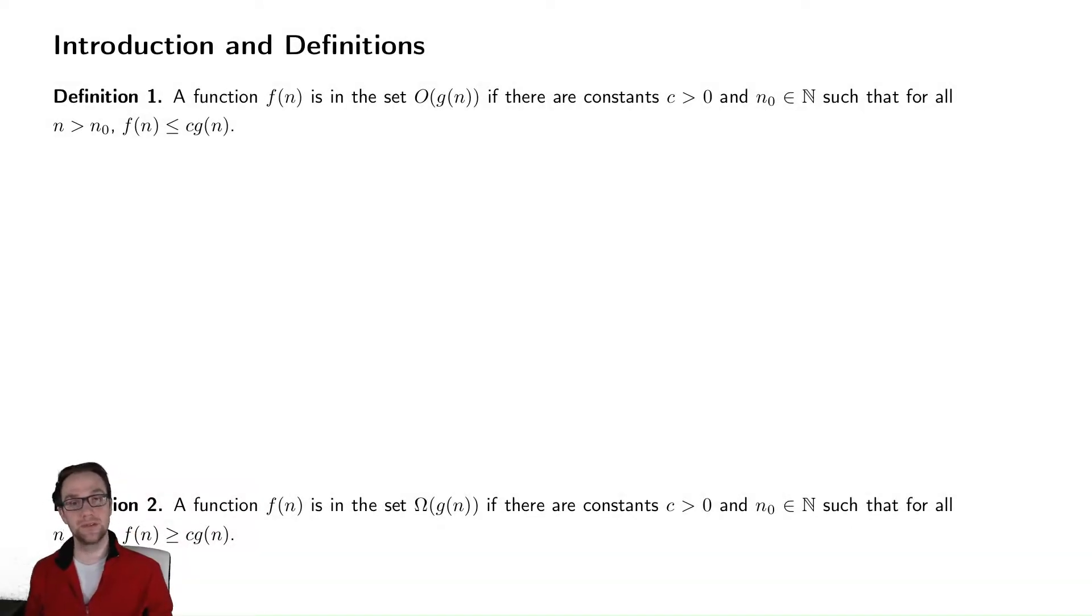In this video, we're going to introduce the three most important definitions for asymptotic notation, those being big O, big omega, and big theta. These are going to be sets that we use to describe the growth rates of functions.